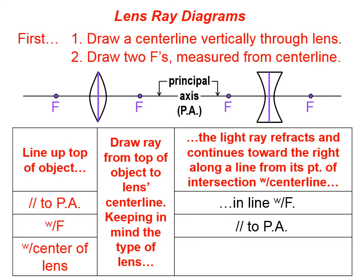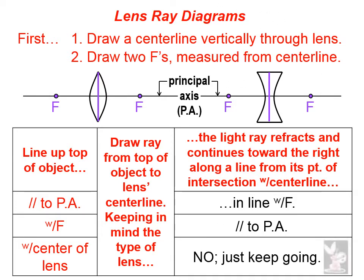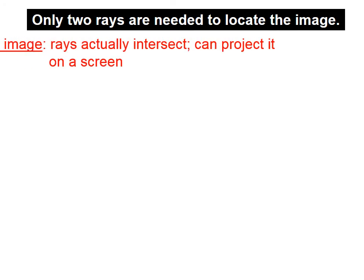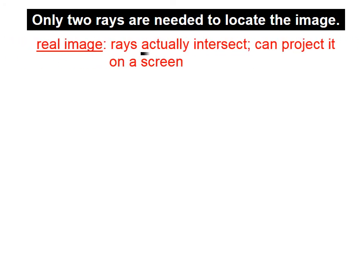The third rule, which is the easiest of all, is if you draw a ray from the top of the object to the very center of the lens, you simply keep going straight — it's just a straight line. Only two rays are needed to locate the image; we mentioned three, but really we only need two of them in order to locate our image.